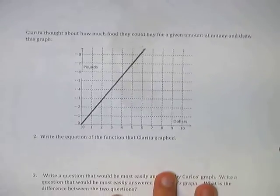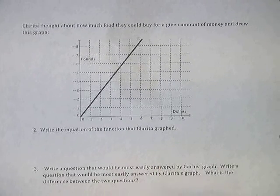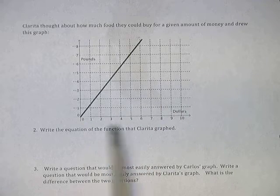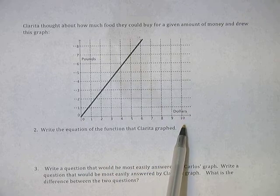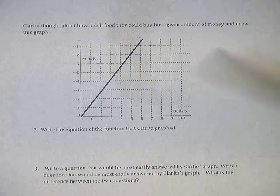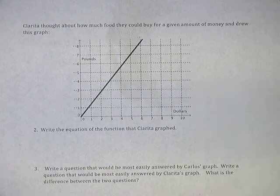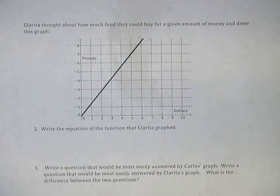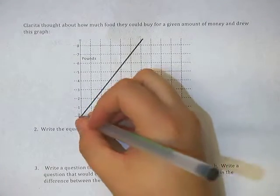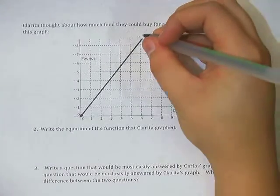So let's go to the next page here. Clarita thought about how much food they could buy for a given amount and drew this graph. So it's the same information, but a slightly different look at it. Now our input is how much money she has to spend, so her budget, and she's trying to figure out how many pounds she can buy on that budget.